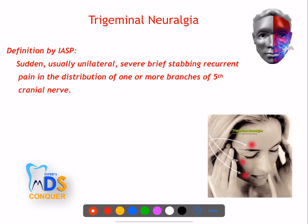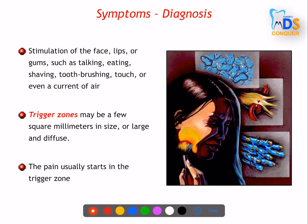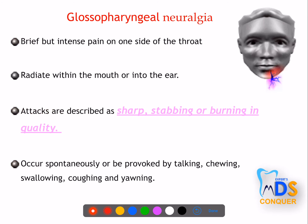Trigeminal neuralgia presents with episodic, severe, sudden, unilateral stabbing pain which is recurrent along one or more branches of the fifth cranial nerve. The mandibular division is most commonly involved, followed by maxillary and ophthalmic. Even slight stimulation — smiling, exposure to cold air, washing the face, shaving, or applying makeup — can trigger the pain at trigger zones.